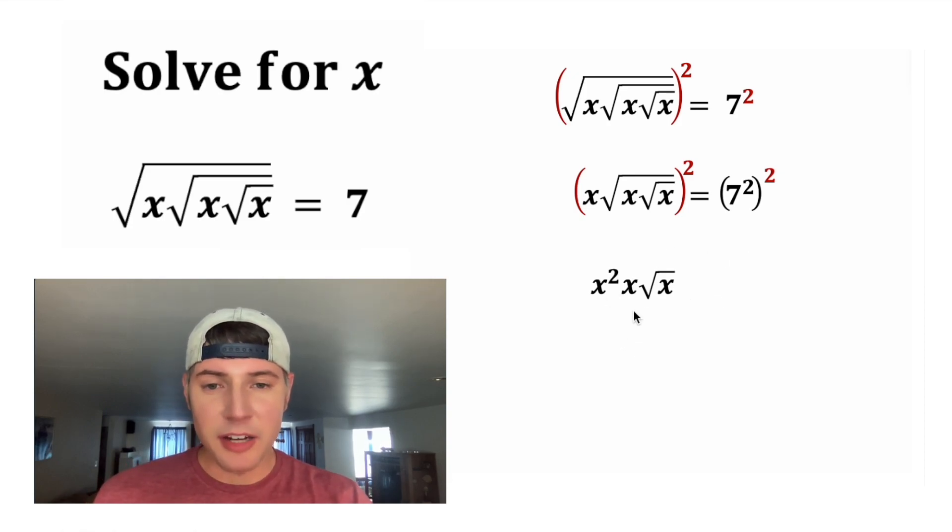And so on the left hand side, we'll have x squared x root x. And on the right hand side, we can multiply these two exponents to give us 7 to the fourth.